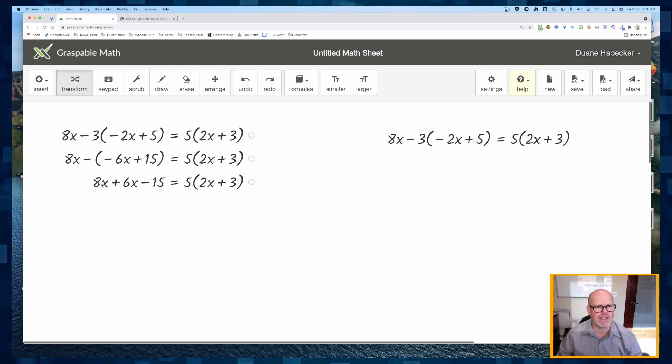If I want to simplify this 8x and 6x, I could grab the plus and put it right on top. Notice I'm holding that plus 6x and I can put it right on top of that 8x. It simplifies, or I could have double clicked that plus sign and it would also simplify. So I have some choices here. Nothing else for me to simplify on that left side. So let's focus on the right side now. I'm going to distribute that five. So I'm going to click on that five, drag it into the parentheses, simplify stuff.